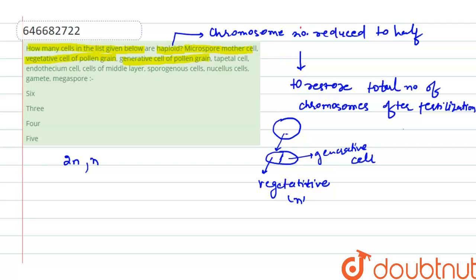Another option is generative cell of pollen grain, so ploidy of this generative cell of pollen grain will also be n.